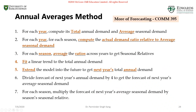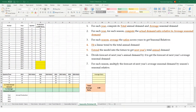To solve seasonality problems there are two approaches: the centered moving average method and the annual averages method. In this course we'll use the annual averages method, where we use annual averages to calculate seasonal indices and then use those seasonal relatives to re-seasonalize the forecast obtained from trend analysis. We'll apply this using a dataset in Excel — specifically the seasonality worksheet Q9 in the Chapter 3 data file.